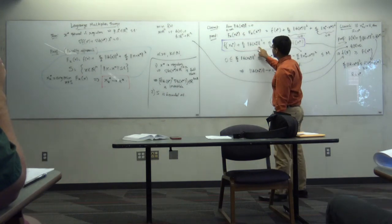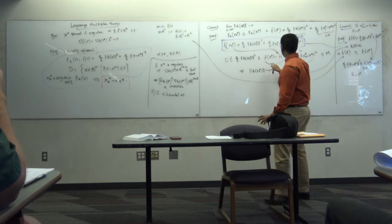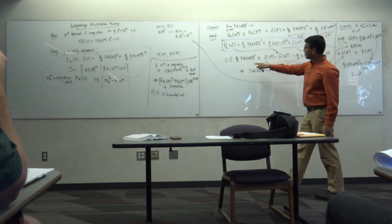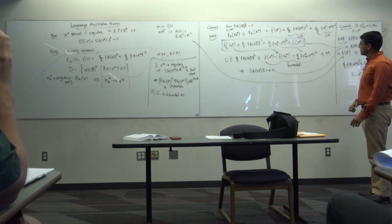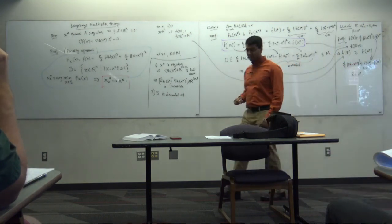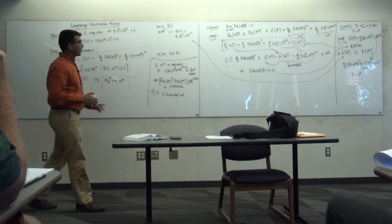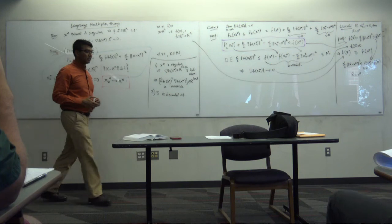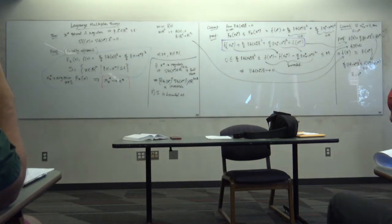This term could be converging to some constant — all I know is the right-hand side is bounded and the norm term is greater than or equal to zero. I'll get back to this point next class. Until now we have x_k* converging to x*.